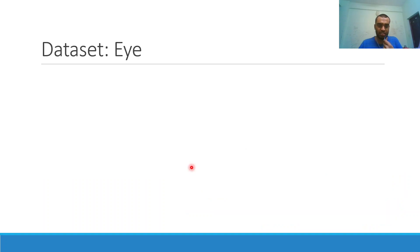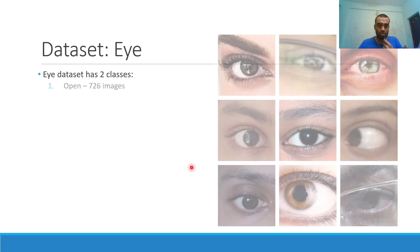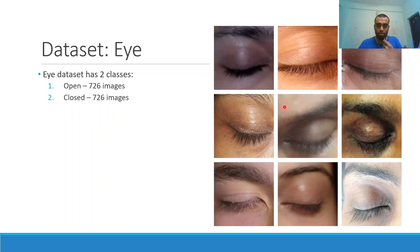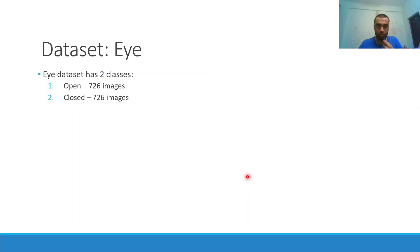For the eye dataset, there are two classes. The open class has 726 images — here we can see some sample images with a lot of variety: some are of the left eye, others of the right eye, some have spectacles, and some are looking in different directions. The closed class also has 726 images, with variation in spectacles, lighting conditions, and overall eye shape. A total of 1,452 images are in this dataset.